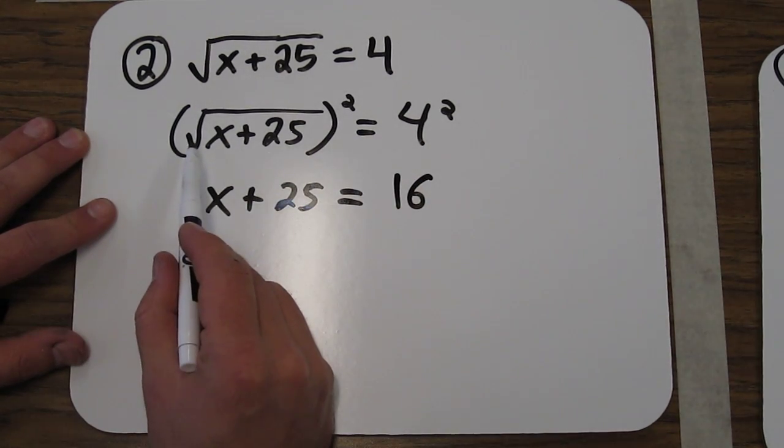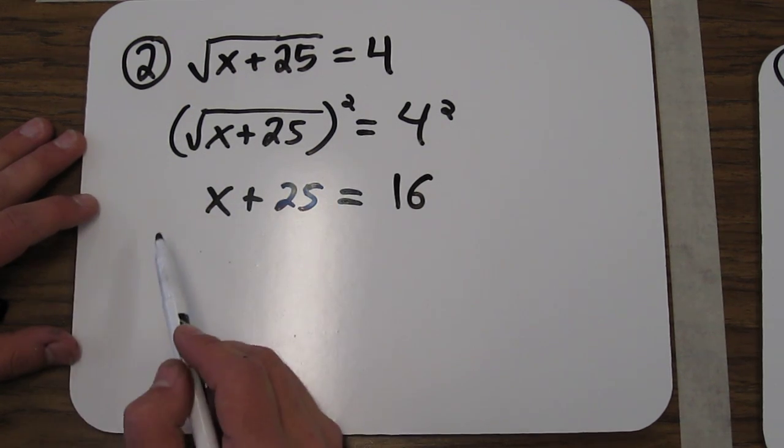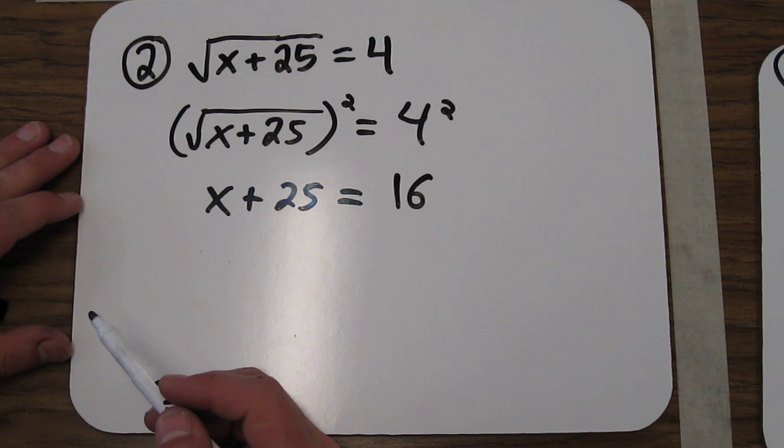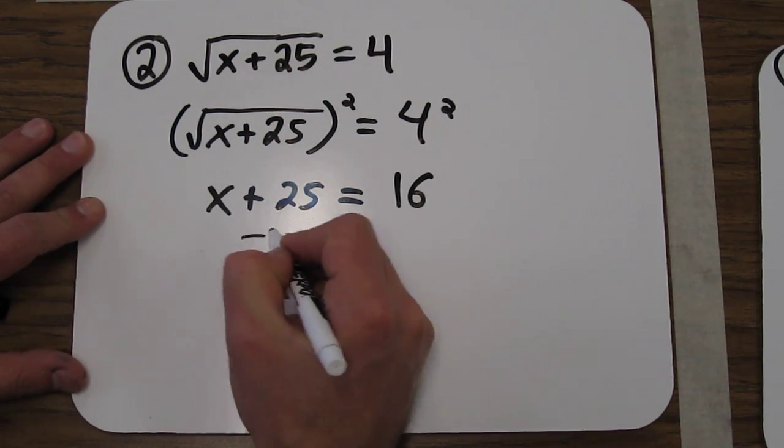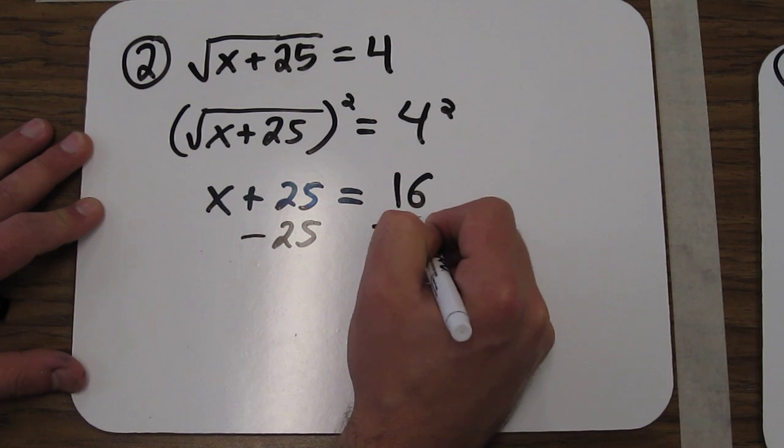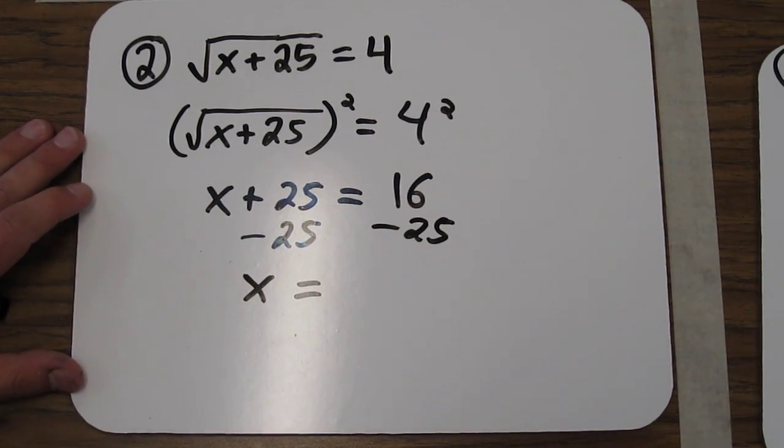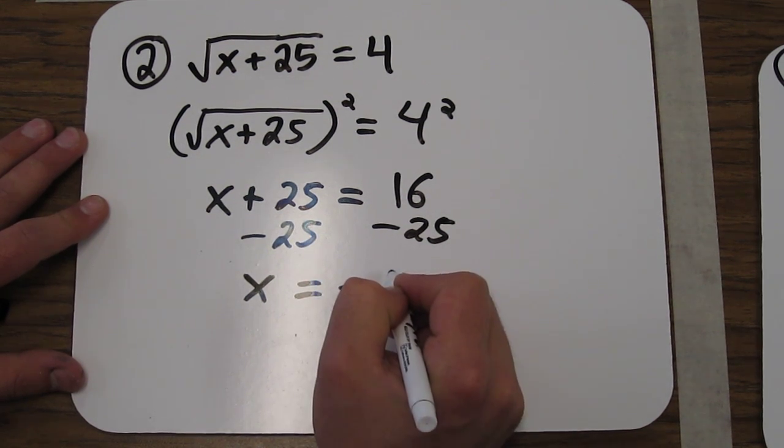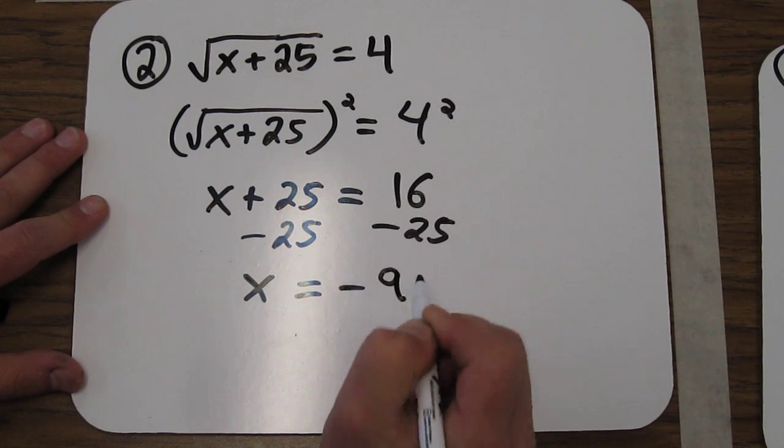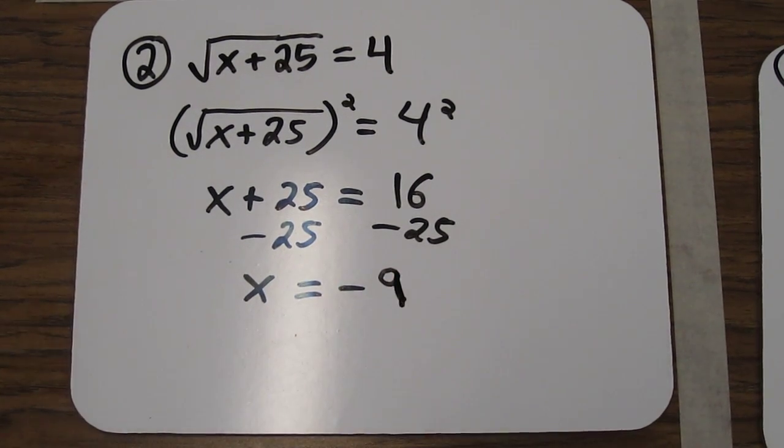The square root went away because it's really the exponent of 1/2. 1/2 times 2 would get us the exponent of 1. So now we have x plus 25 equals 16. If we subtract 25 from both sides, we find out that x equals negative 9.